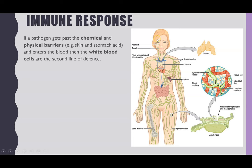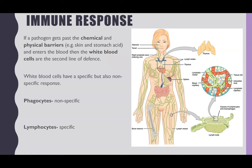So the immune response. If a pathogen does manage to get past the chemical or physical barriers — which could be the skin acting as a barrier, or within the chemical barriers we've got the stomach acid — the next line of defense would be the white blood cells in the immune system. White blood cells have specific but also non-specific responses. A non-specific response would be the phagocytes, which is what we're going to focus on today.